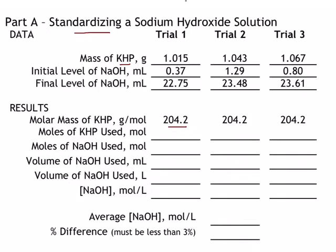In the first trial, somebody used 1.015 grams of KHP and filled their burette with sodium hydroxide. They recorded an initial level of 0.37 milliliters and a final level of 22.75 milliliters. If you think you know what you're doing, pause the video and try to fill in the results for trial one. Let's jump in and do the first one together.